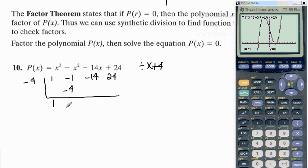You bring the 1 down. 1 times negative 4 is negative 4. You add down, you get negative 5. Negative 5 times negative 4 is 20. Add down, you get 6. 6 times negative 4 is negative 24. And the remainder is 0.